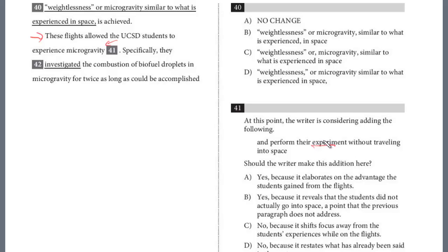So it's definitely going to be an add. There's going to be two yeses and two noes. Is it yes, because it elaborates on the advantages the students gained from the flights? That looks good. Or it reveals the students did not actually go into space, a point that the previous paragraph does not address? No, it does discuss that, actually right above. And so the answer here is A for question 41.